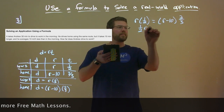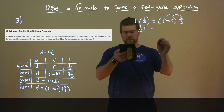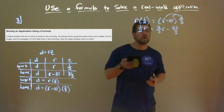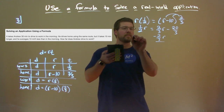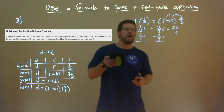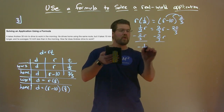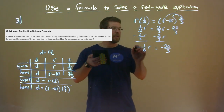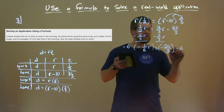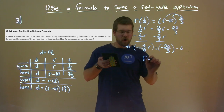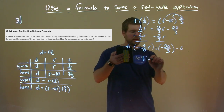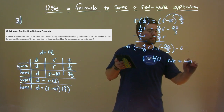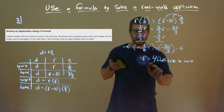Our goal is to get R by itself. We subtract two-thirds R from both sides. One-half R minus two-thirds R is negative one-sixth R, and that equals negative 20 over 3. From there, we multiply both sides by negative six. That cancels out the fraction on the left, leaving R. Negative 20 over 3 times negative 6 is positive 40. So his rate to work is 40 miles per hour.